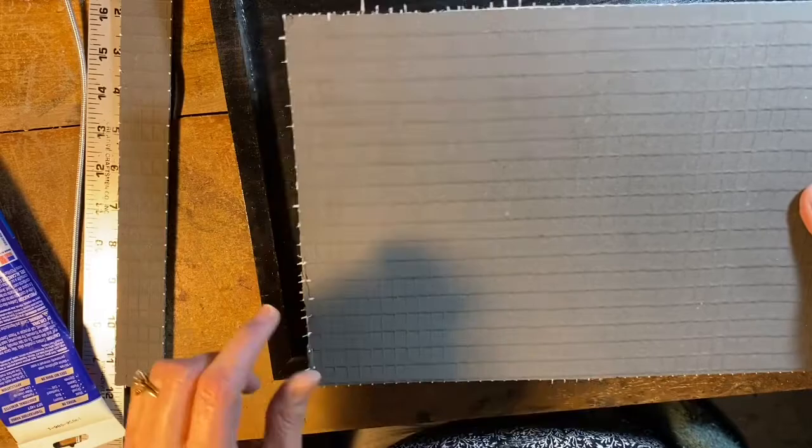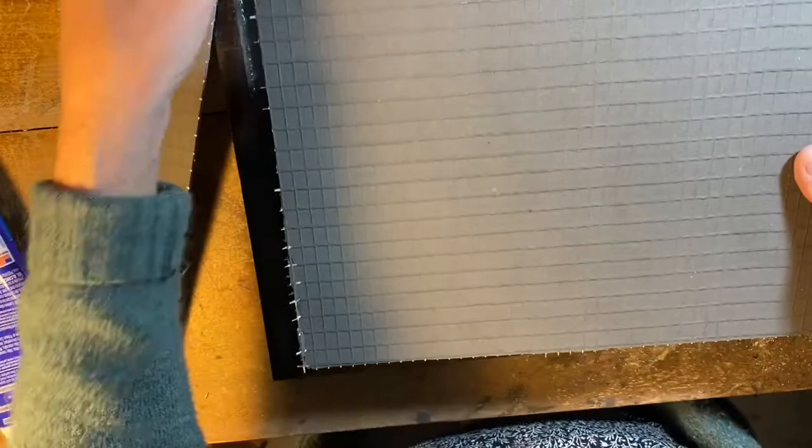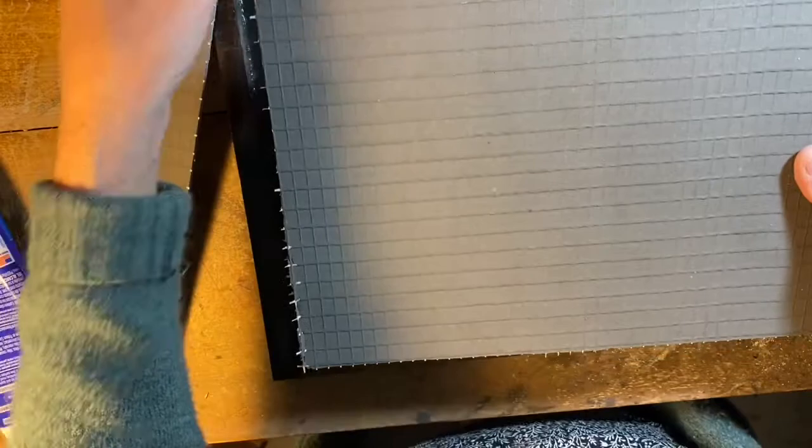Now I'm using some scrap, and so I'll be piecing it together. And before I glue this in, I will be trimming it so that these little fibers don't stick up. And I will be using Power Grab glue to stick it down.